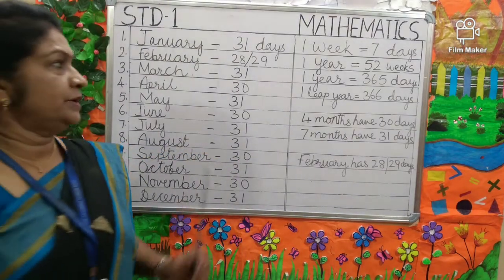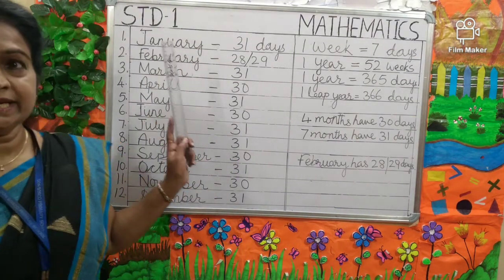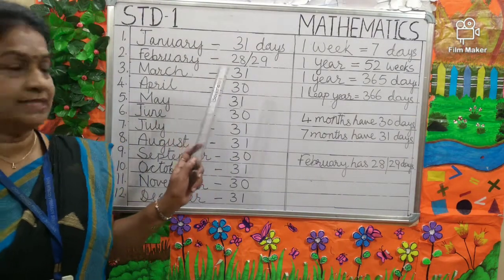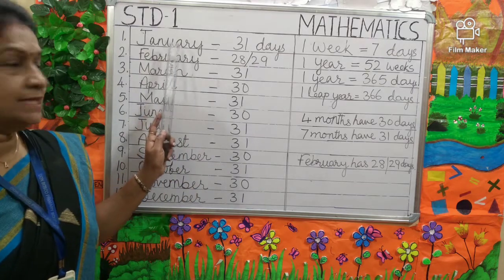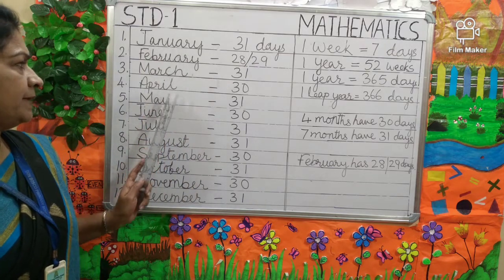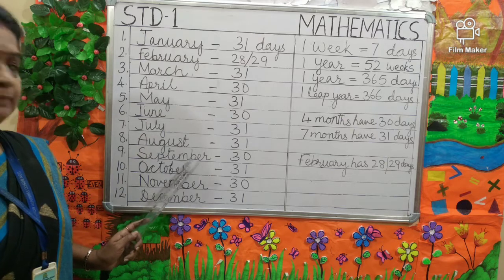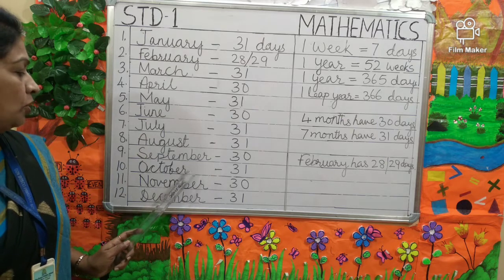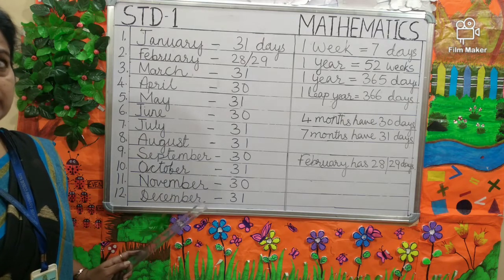Now, look at the board. Once again we can revise it. The months are January, February, March, April, May, June, July, August, September, October, November, December.